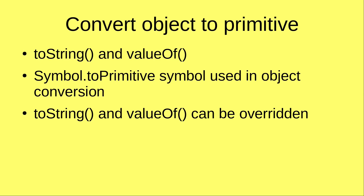JavaScript has already provided two methods: one is called toString and the other one is called valueOf, in order to do the conversion for us. But by default, they are not able to do the things pretty well. That's why we have to propose two methods to address the problems. The first one is to use a symbol called symbol.toPrimitive, and the other way is to overwrite the given toString and valueOf methods.